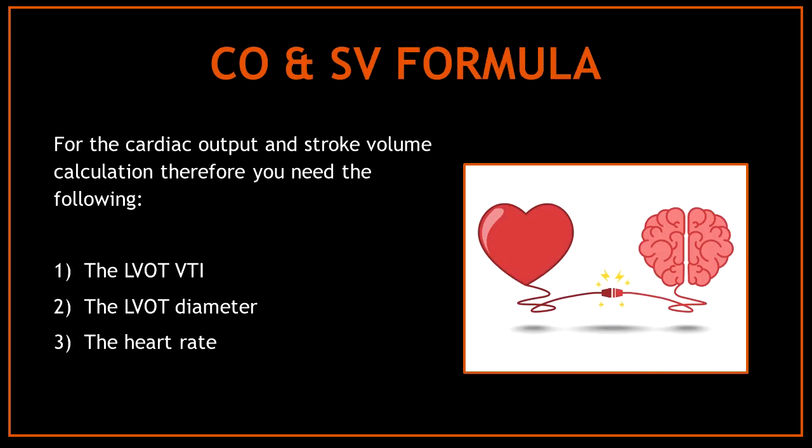In conclusion, for the cardiac output and stroke volume calculation you need: first, the LVOT VTI; second, the LVOT diameter; and third, the heart rate. I will show you how to measure these in echocardiography in three simple steps.